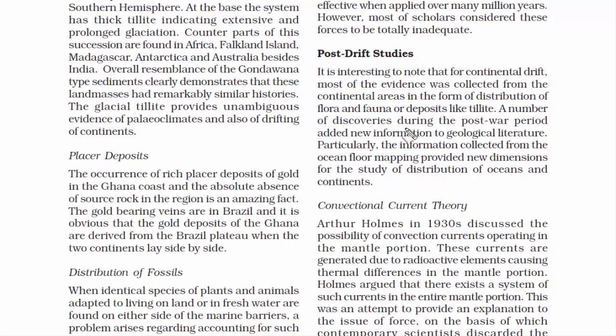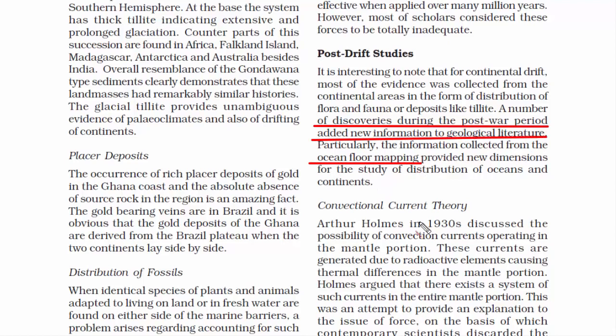Alfred Wegener proposed his theory on Continental Drift in 1915, during the time of World War I. A number of discoveries during the post-war period added new information to geological literature. Particularly, information collected from ocean floor mapping provided new dimensions for the study of distribution of oceans and continents. Let's read about what those new pieces of information were.